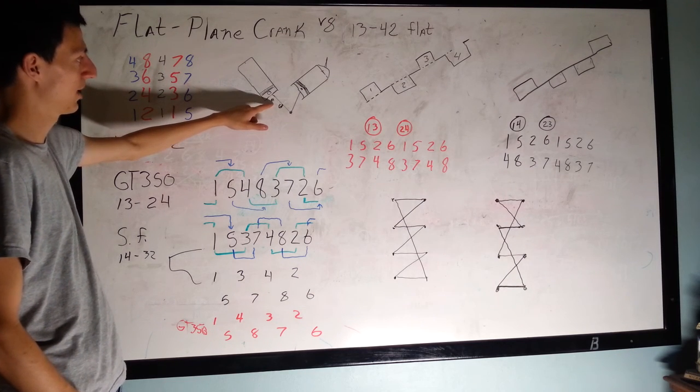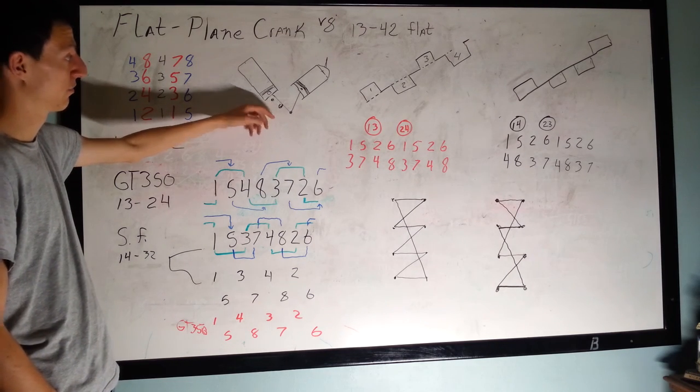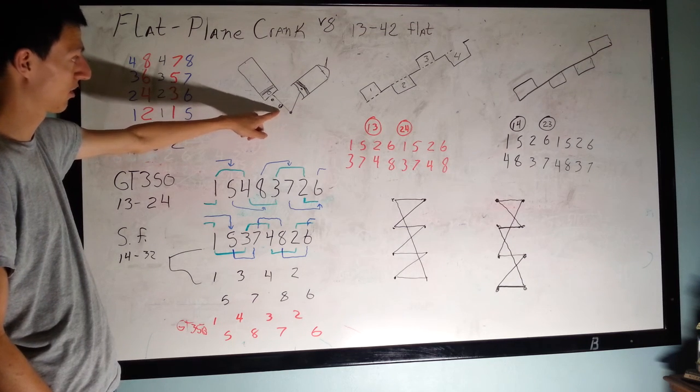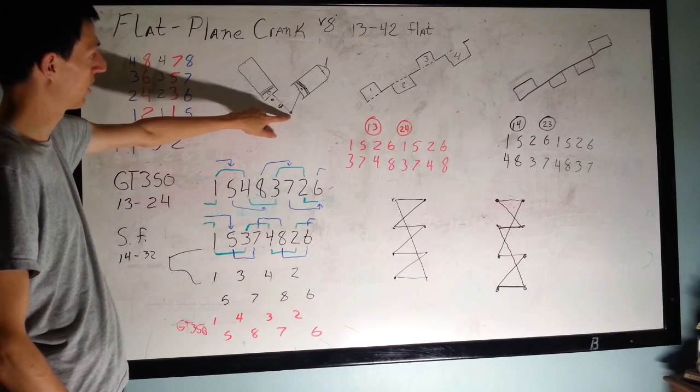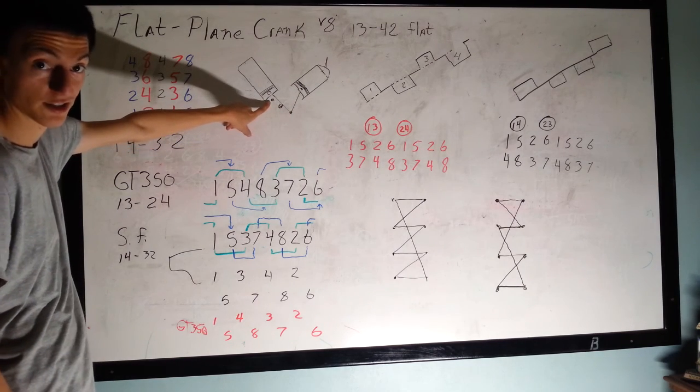So a flat plane crank, you have the center of the crank where it's rotating along, and then you have your journals. Some point up, some point 180 degrees in the opposite direction.